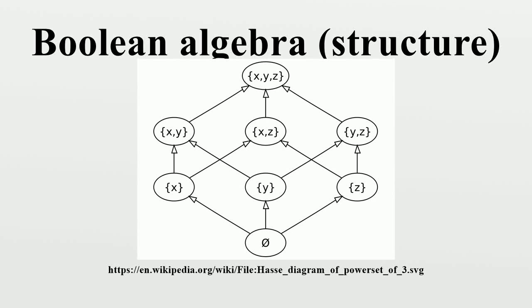In abstract algebra, a Boolean algebra or Boolean lattice is a complemented distributive lattice. This type of algebraic structure captures essential properties of both set operations and logic operations.